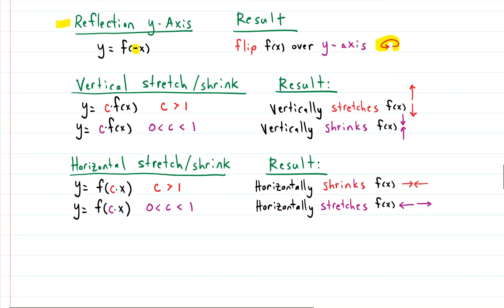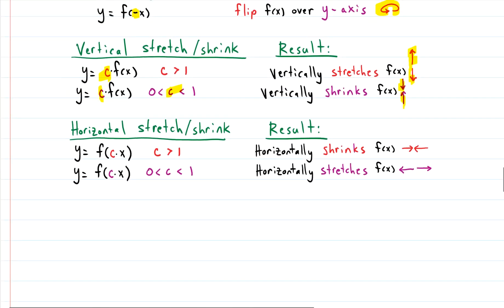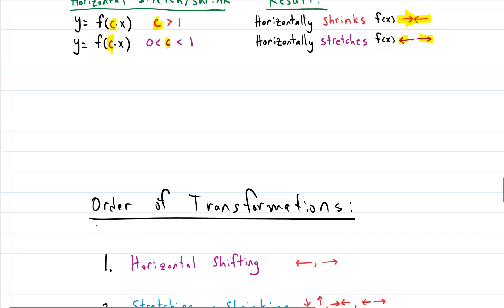We also have vertical stretches and shrinks. I go through all of these in detail in a different video in my algebra playlist. If you multiply by a constant on the outside of a function, you vertically stretch or shrink — moving away from or toward the x-axis. If that constant is bigger than one, you move away from the x-axis; if it's between zero and one, you move toward it. For horizontal stretches and shrinks, you multiply by a constant inside the function. If that constant is bigger than one, you shrink toward the y-axis; if it's between zero and one, you push away from the y-axis.